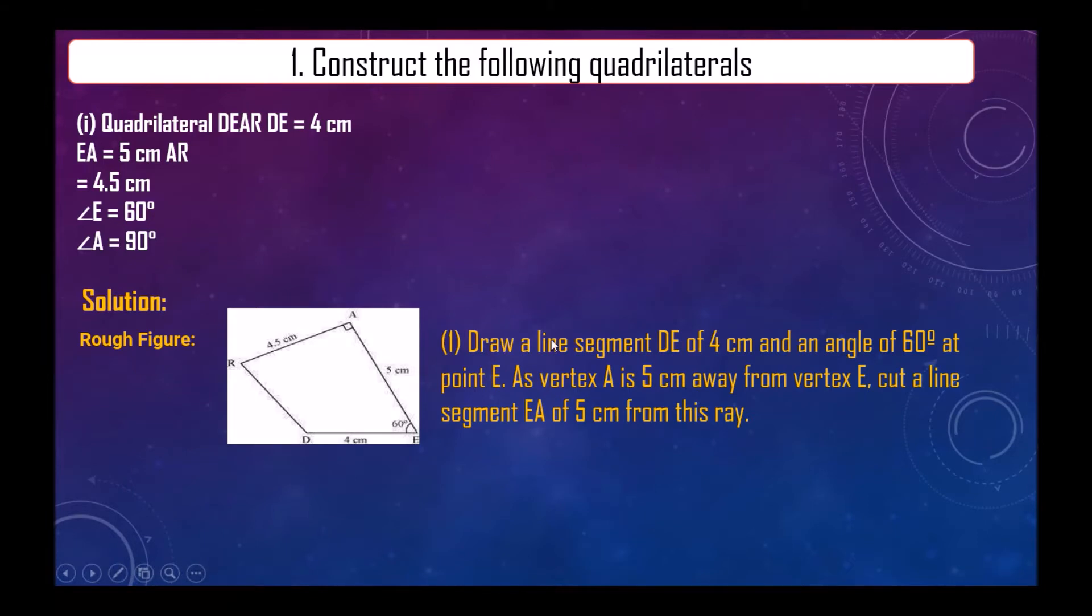Rough sketch we have drawn. So first we will draw a line segment DE of 4 centimeter and an angle of 60 degree at point E. So line segment DE of 4 centimeter and angle 60 at point E.